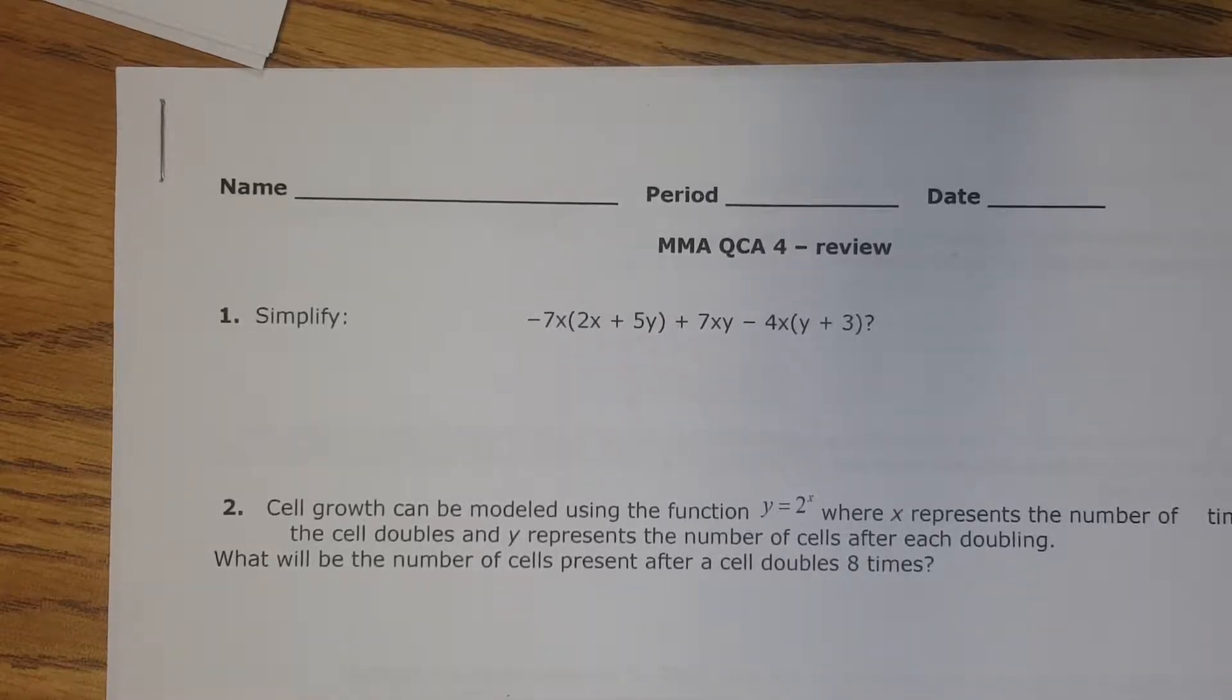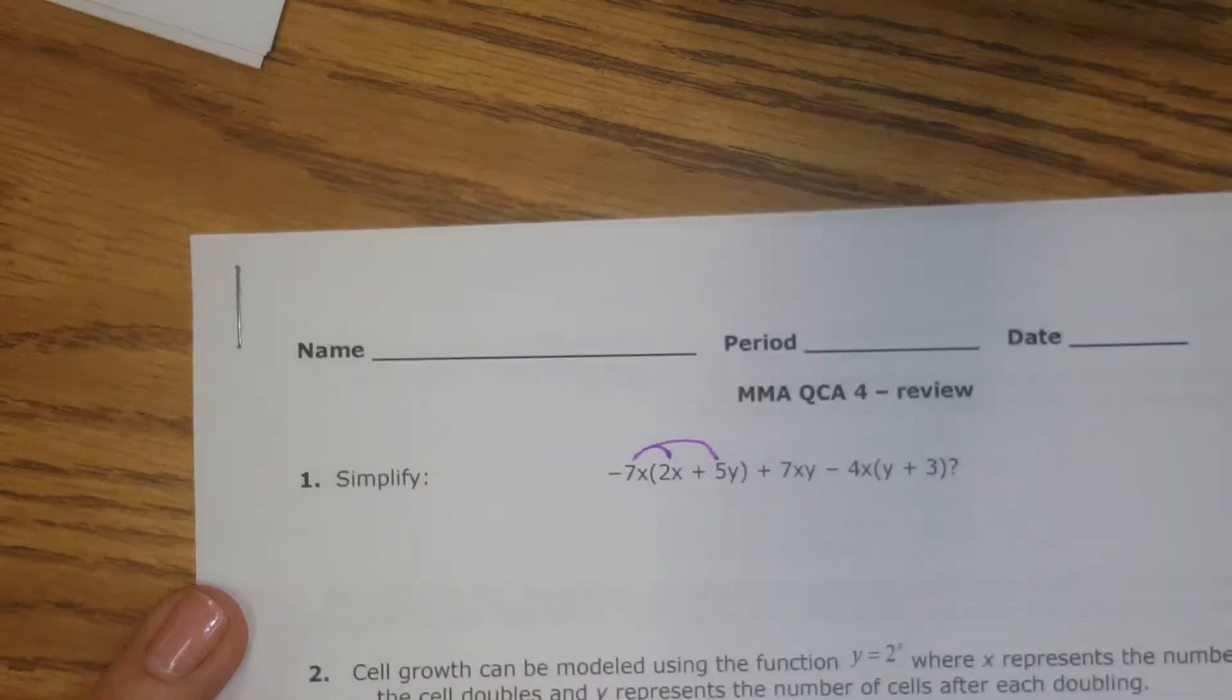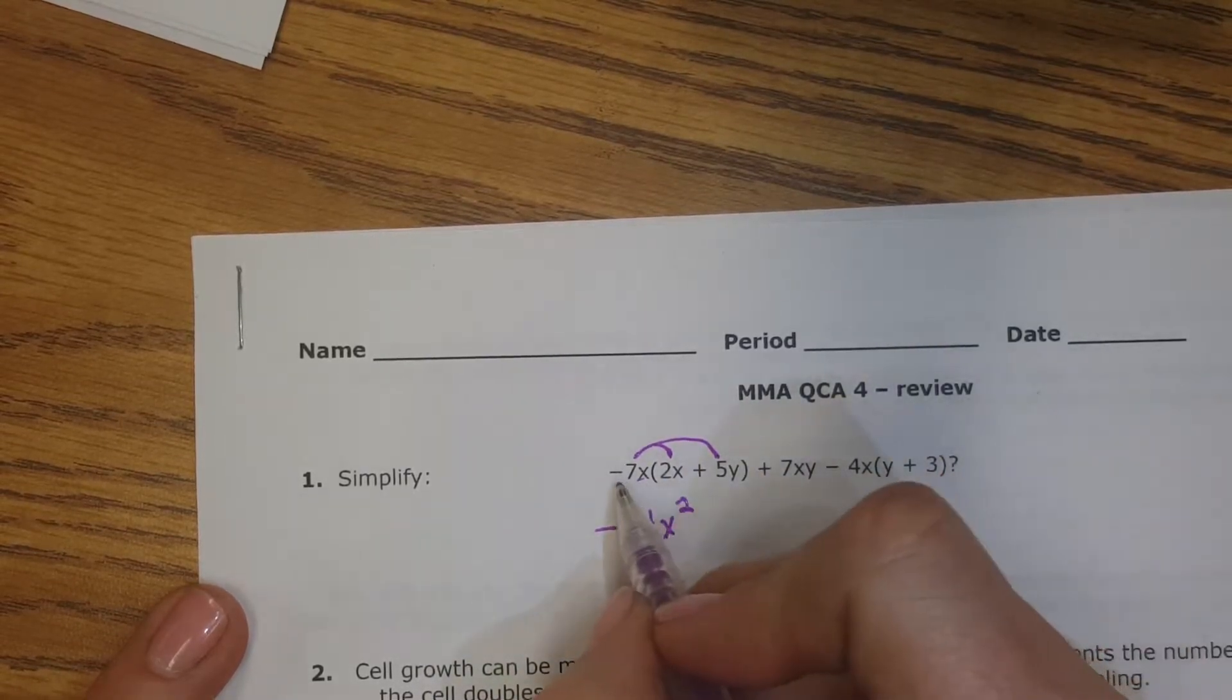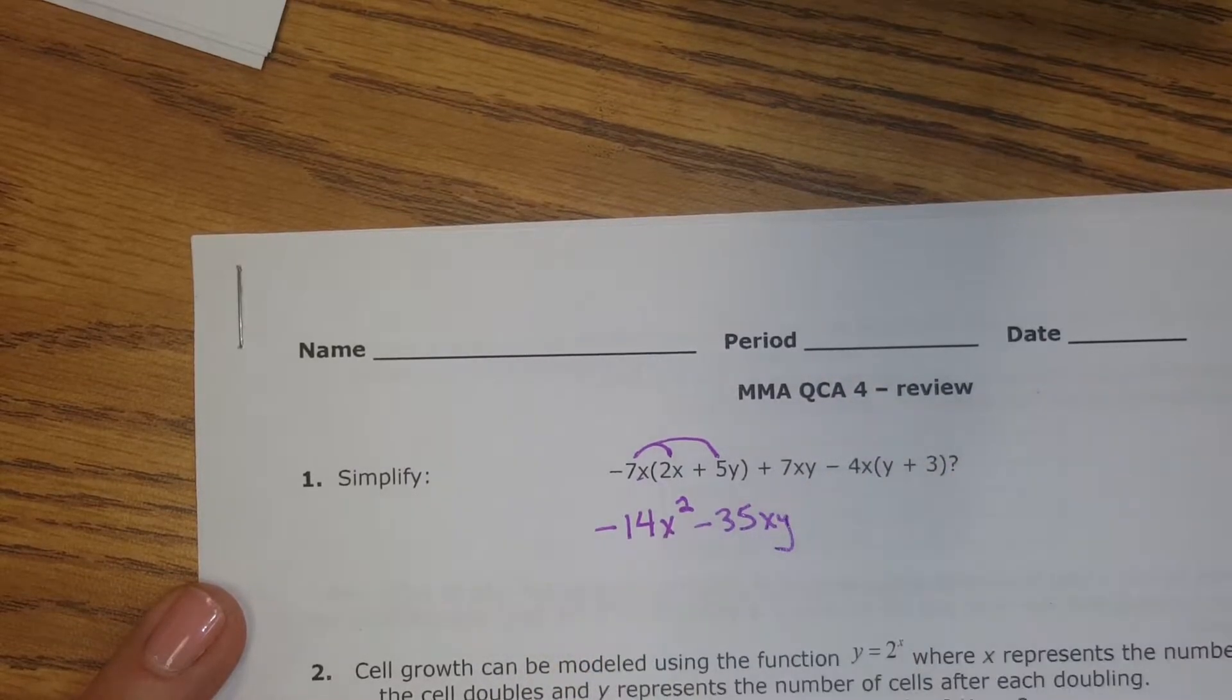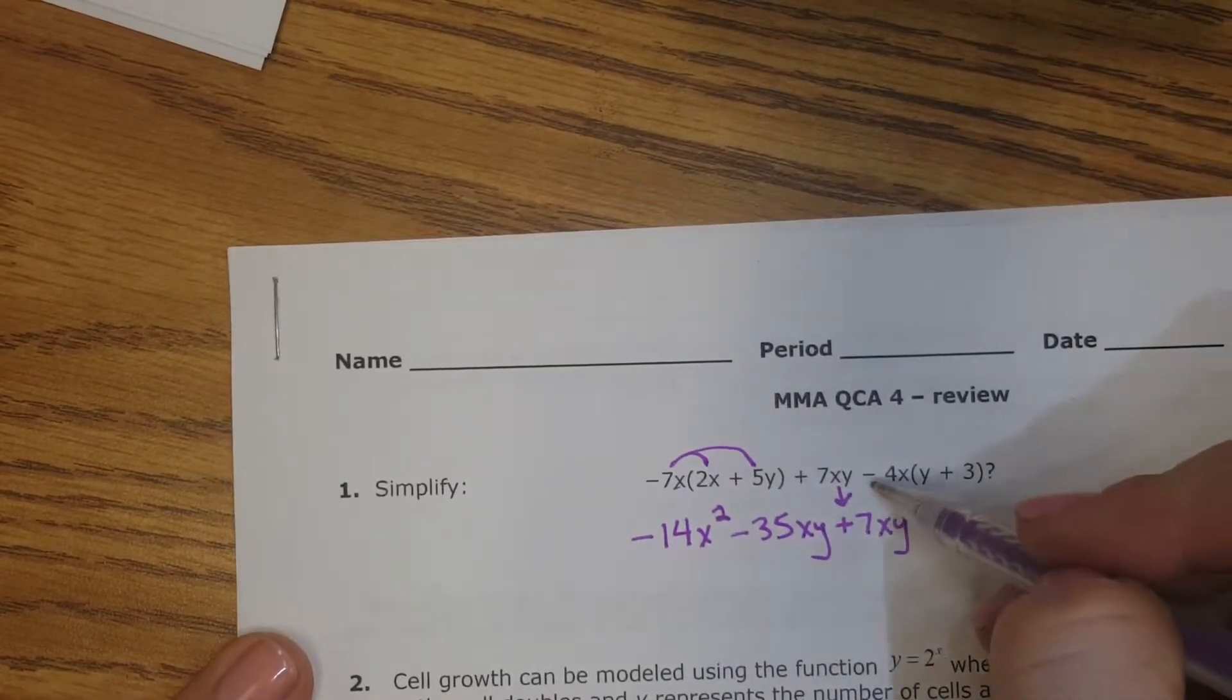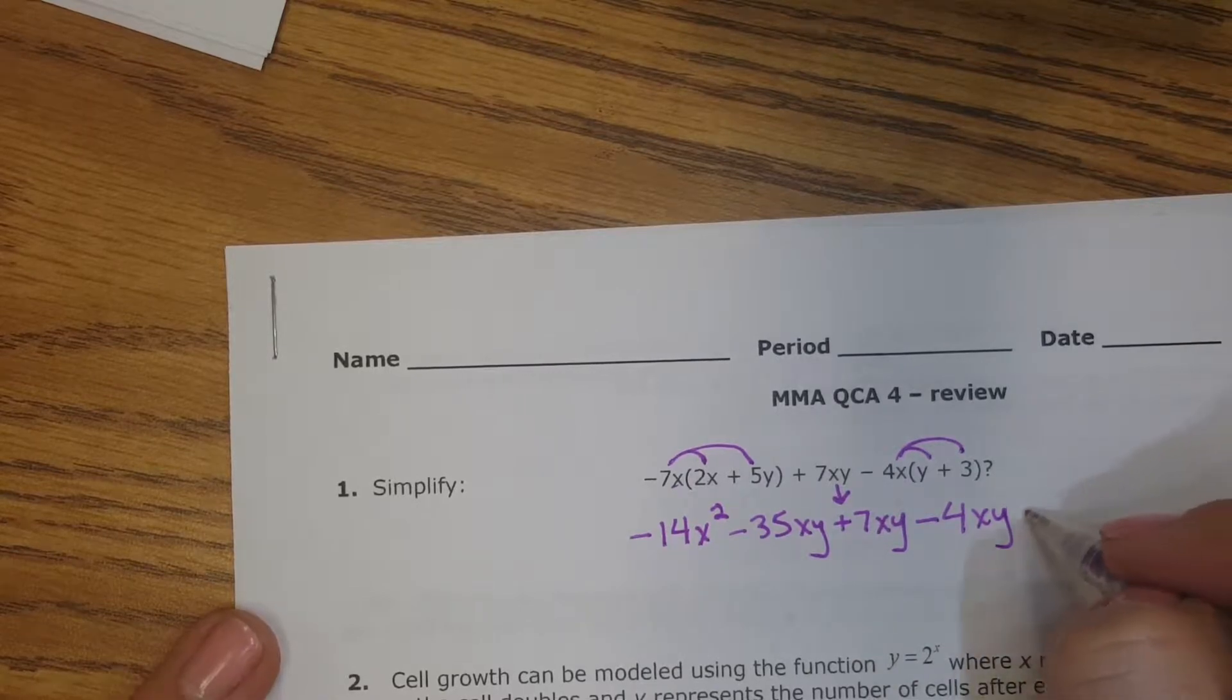It tells us to simplify, so we're going to do 7x distributed, negative 7x distributed with the 2x and with the 5y. That's going to give me negative 14x squared, because x times x is x to the second power, and negative 35xy. I'm going to bring down this 7xy. It's positive. I'm also going to distribute the negative 4x to the y and to the 3. So that's negative 4xy and negative 12x.